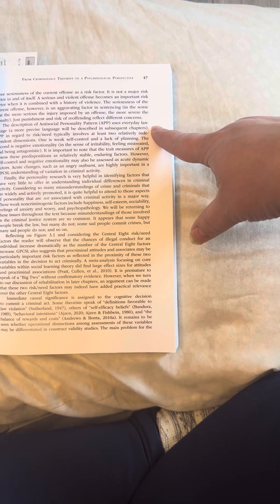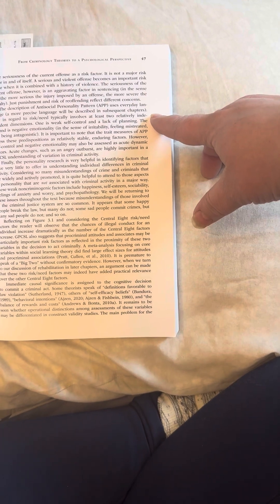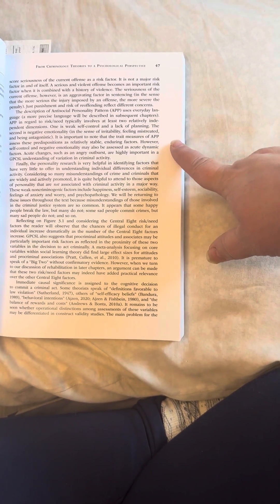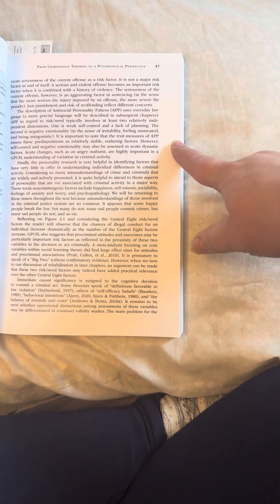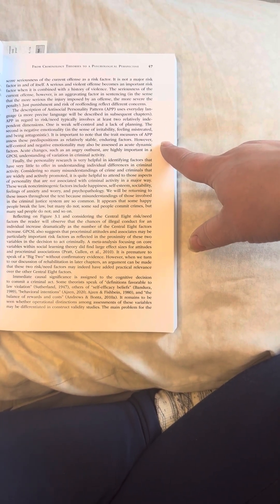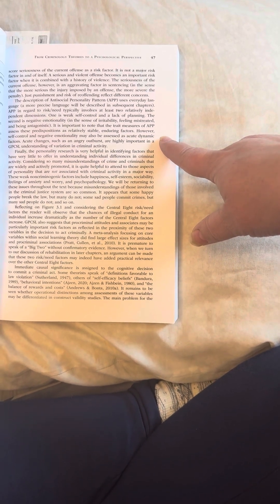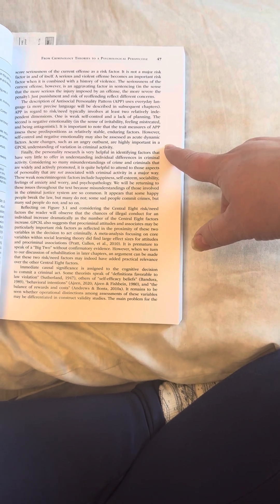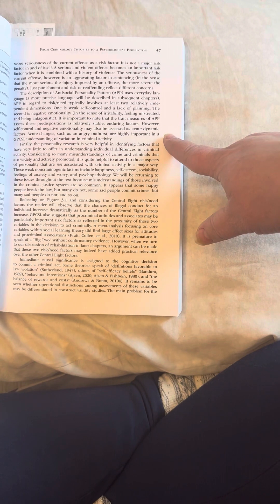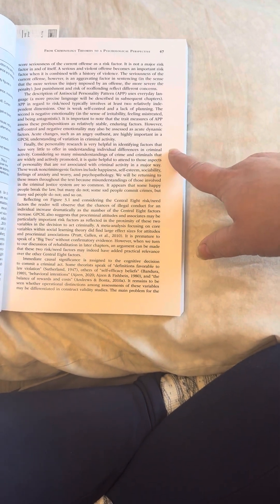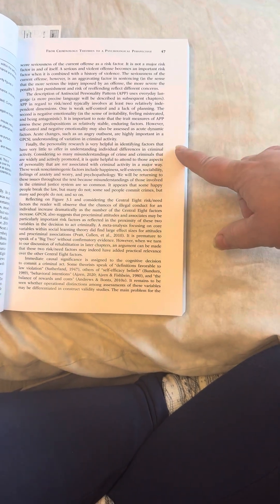The description of antisocial personality pattern, APP, uses everyday language. A more precise language will be described in subsequent chapters. APP, in regard to risk-need, typically involves at least two relatively independent dimensions. One is weak self-control and a lack of planning. The second is negative emotionality in the sense of irritability, feeling mistreated, and being antagonistic. It is important to note that the trait measures of APP assess these predispositions as relatively stable enduring factors. However, self-control and negative emotionality may also be assessed as acute dynamic factors. Acute changes, such as an angry outburst, are highly important in a GPCSL understanding of variation in criminal activity. Finally, the personality research is very helpful in identifying factors that have very little to offer in understanding individual differences in criminal activity.